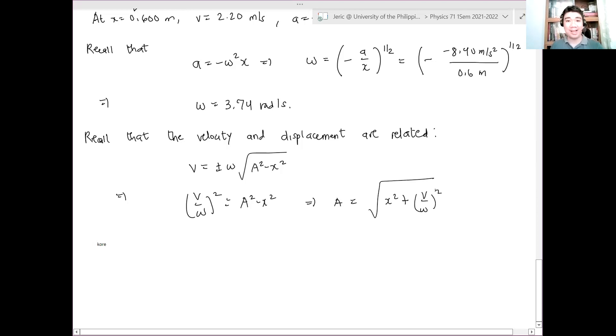And hence, I can just substitute the obtained angular frequency and the position and the velocity that's given. In fact, this is just a is equal to 0.6 meters quantity squared multiplied by V over omega.